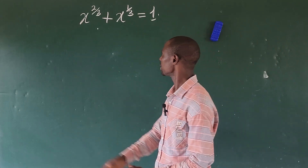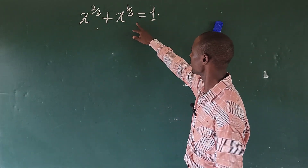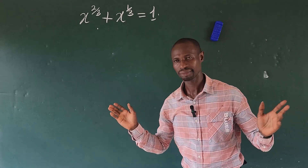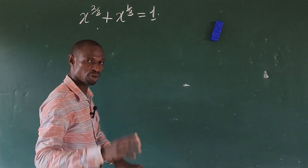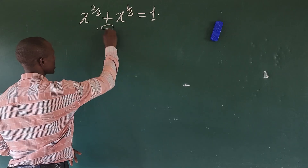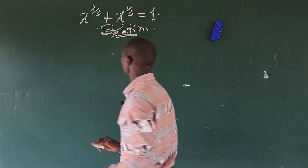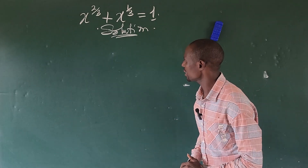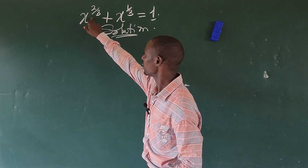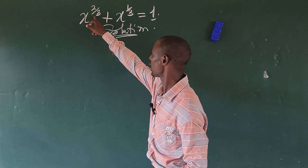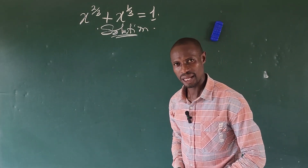So how do we solve this math challenge? The question is: x to the power of two-thirds plus x to the power of one-third equals one. Without much waste of time, we'll go straight to it. Looking at this question, we can separate the exponent here — we have a fractional exponent.